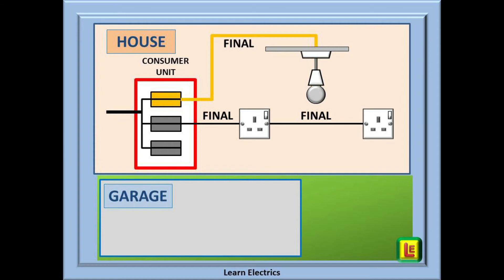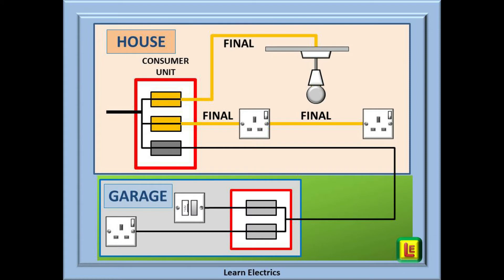Let's make it a little clearer to visualize. We'll use the colour orange for the parts of the lighting circuit that are a final circuit, and we could apply the same colour orange to the final socket circuit. So anything in orange is a final circuit.